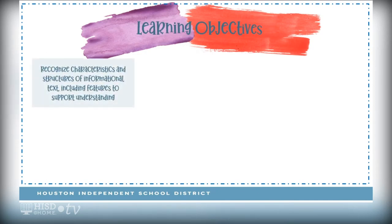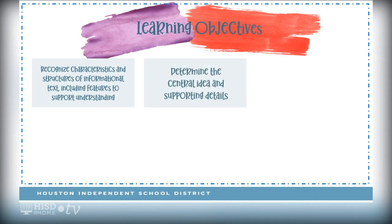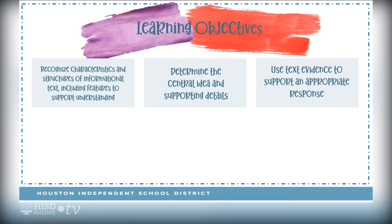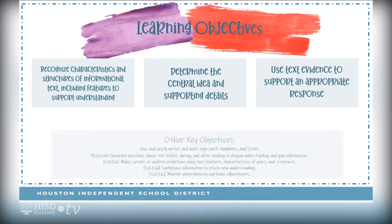Today's learning objectives are: we will recognize characteristics and structures of informational text including features to support understanding. We will determine the central idea and supporting details. We will use text evidence to support an appropriate response.